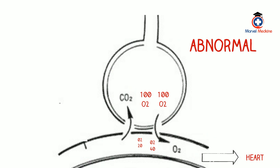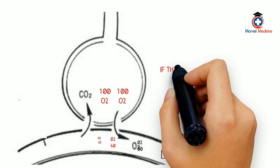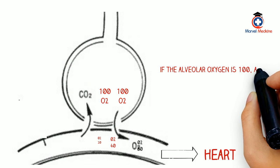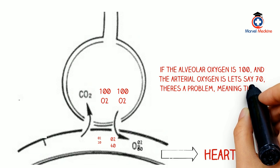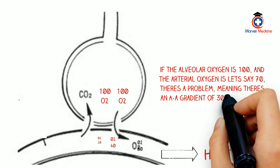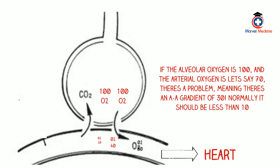Notice how the oxygen level now starts off at 40, but it never gets to 100 the way it normally does, and it's supposed to. This deoxygenated blood joins with the other blood and goes back to the heart. What can we deduce from this? Well, if the alveolar oxygen is 100, and the arterial oxygen is, let's say for example, 70, there's a problem, meaning there's an AA gradient of about 30 now. Normally, it should be less than 10.